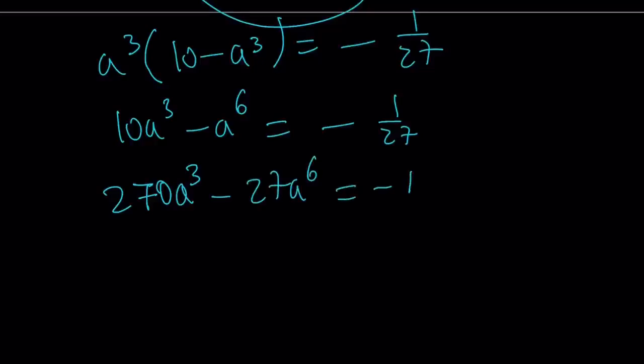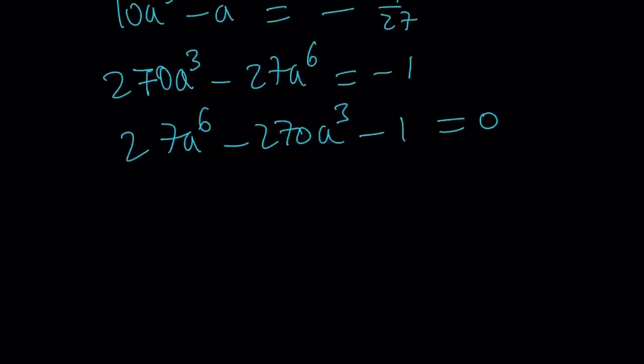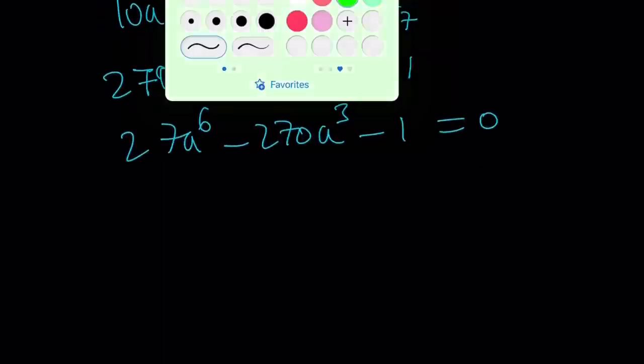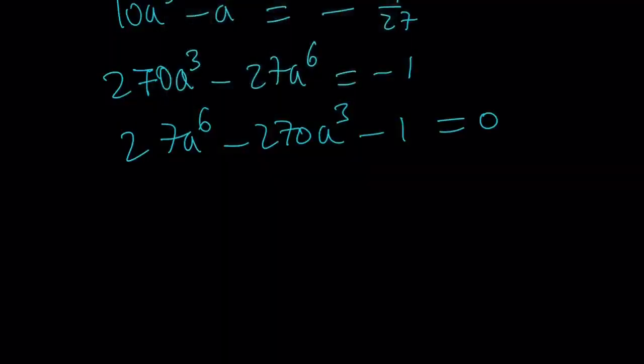Let's go ahead and put everything on the right-hand side. 27a⁶ - 270a³ - 1 = 0. Great. So we got rid of all the fractions. We put everything on the same side. The leading coefficient is positive. Everything looks good. Now, let's go ahead and use substitution to turn this into a quadratic equation. How do I use substitution? Let's call this c. Do you see what I see?